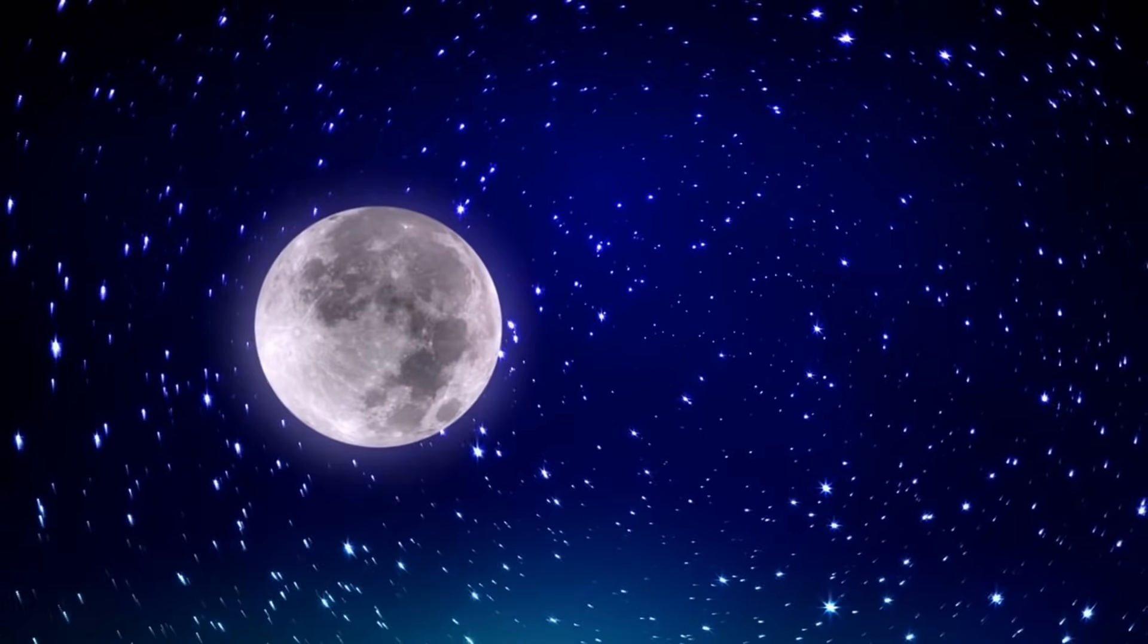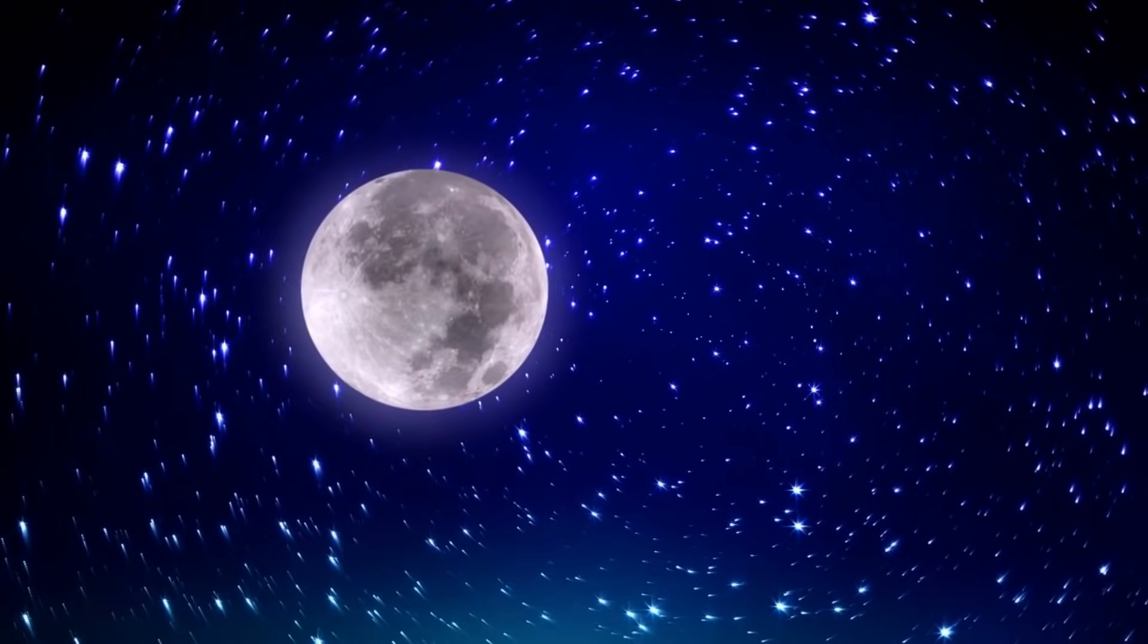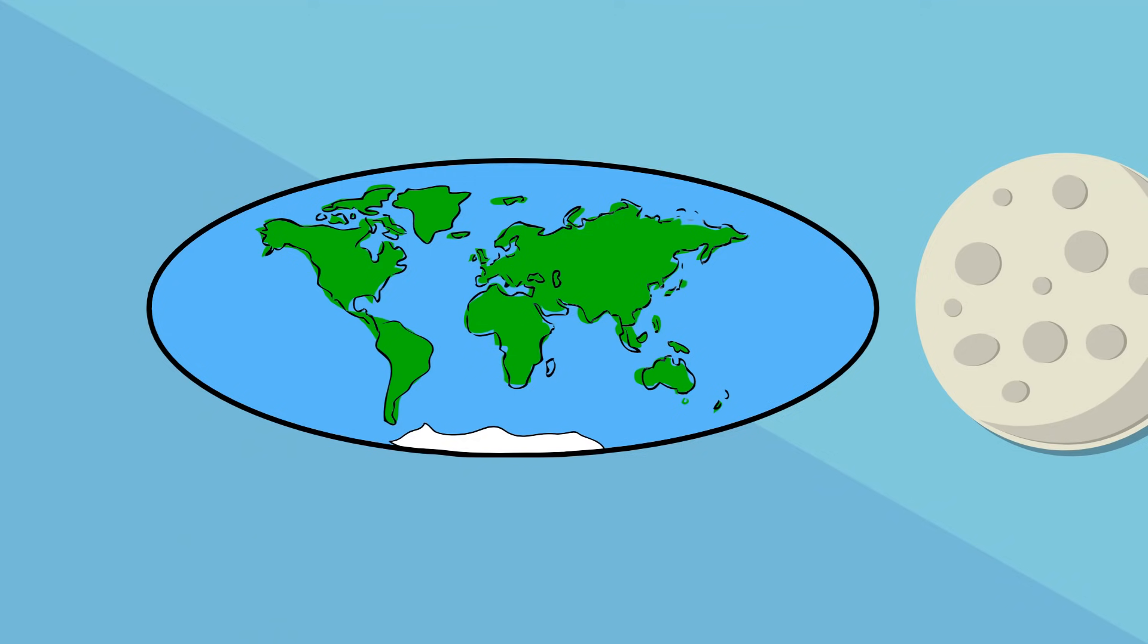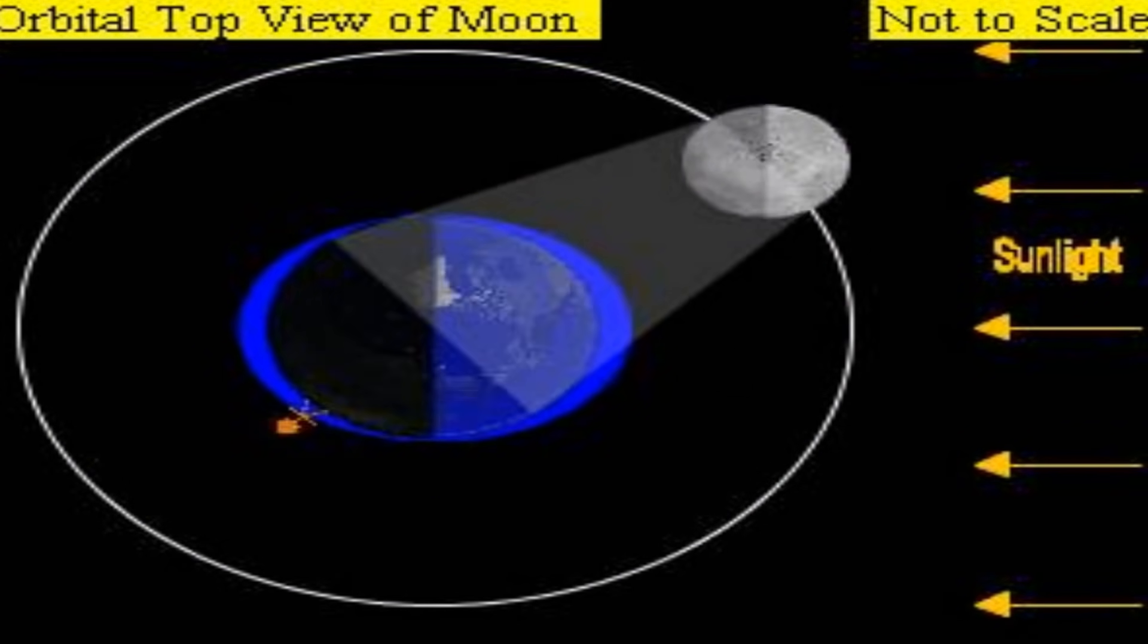On the side of the earth that's facing the moon, the pull of gravity causes oceans to bulge outward. On the other side of the earth, the moon's pull on the solid ground causes the oceans to bulge there. The earth rotates on its axis, so this bulge is constantly changing location.